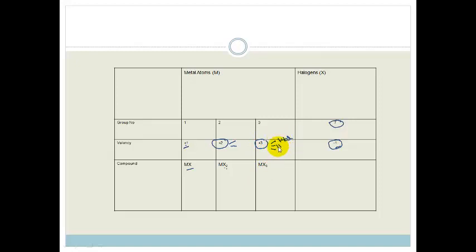So we are going to need 3 halogens. I am writing halogens like this, H-A-L. We are going to need 3 halogens to fill it up. So we need MX3.